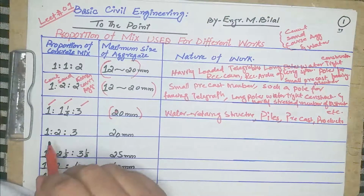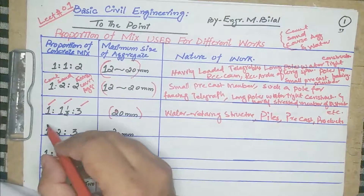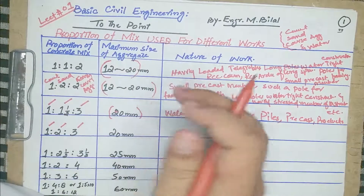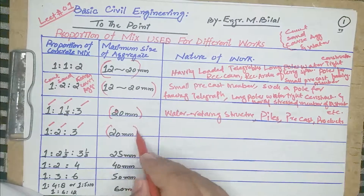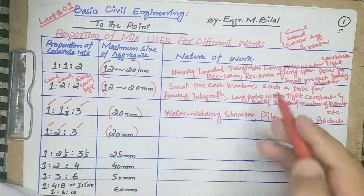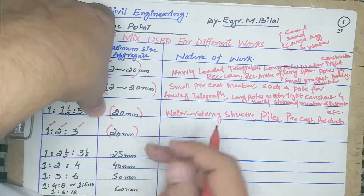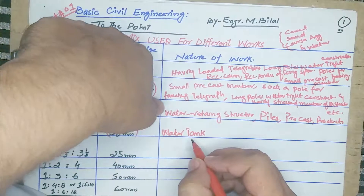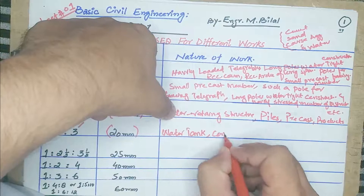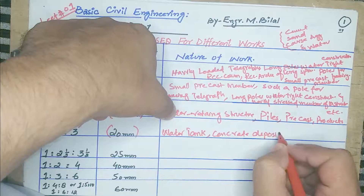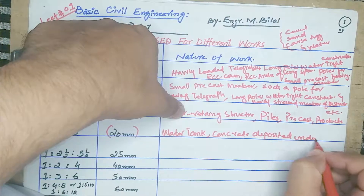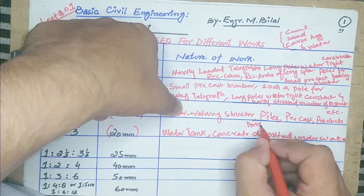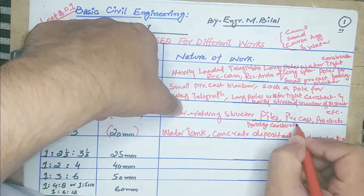The fourth proportion is 1:2:3 — one cement, two sand, and three coarse aggregate. The maximum size of aggregate used for this proportion is 20 mm. This type of concrete mix will be used in water tanks, concrete deposited under water, bridge construction, and sewers.